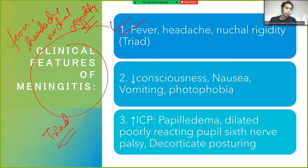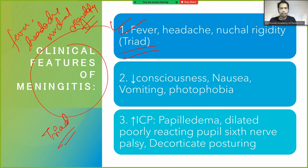The full clinical features of meningitis include the triad of fever, headache, and nuchal rigidity, followed by loss of consciousness, nausea, vomiting, photophobia, and increased intracranial pressure. Papilledema also occurs — papilledema is the swelling of the optic nerve as it enters the back of the eye due to raised intracranial pressure. Sixth nerve palsy and decorticate posturing may also be seen.